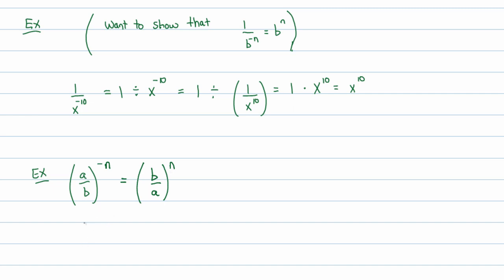Well, I happen to know that a over b to the negative nth power is, by our previous theorem, 1 over a over b to the nth power. Well let's see here how this works.